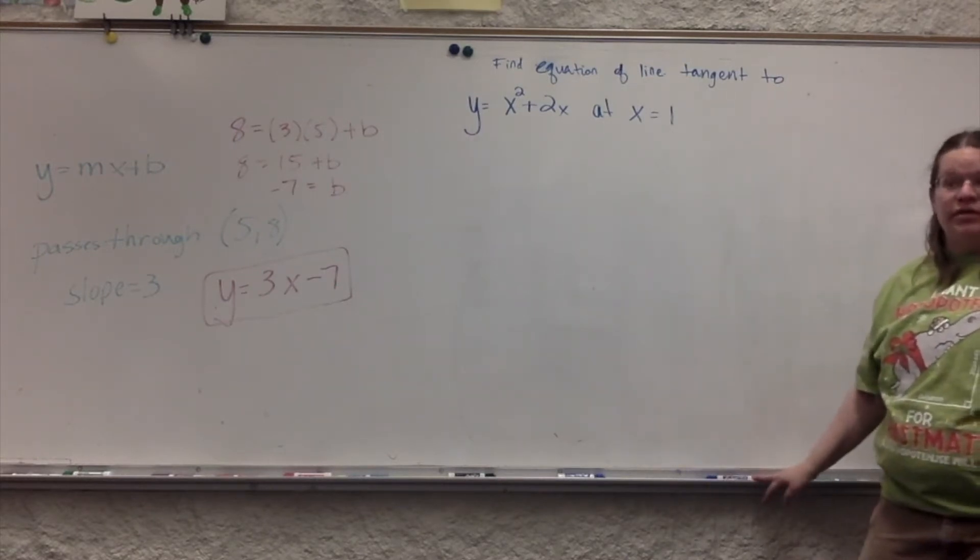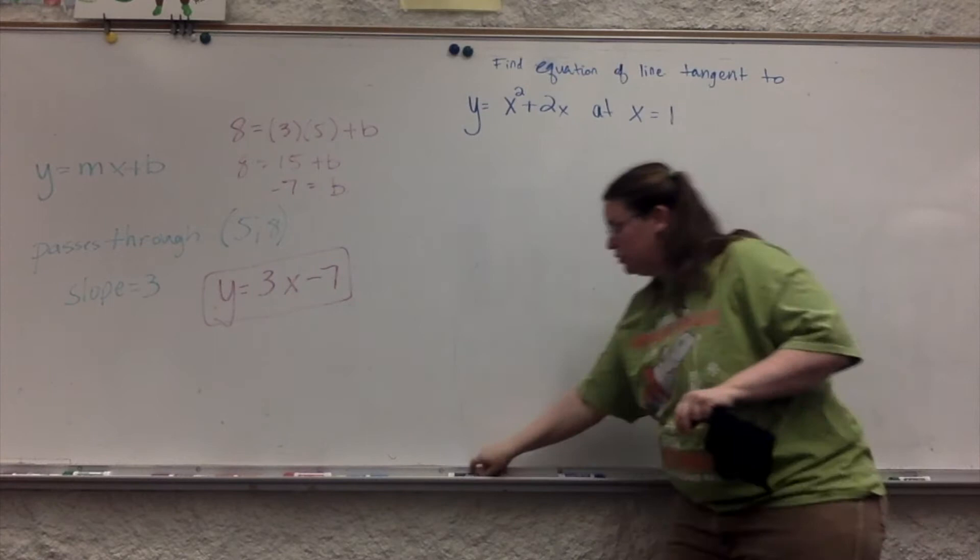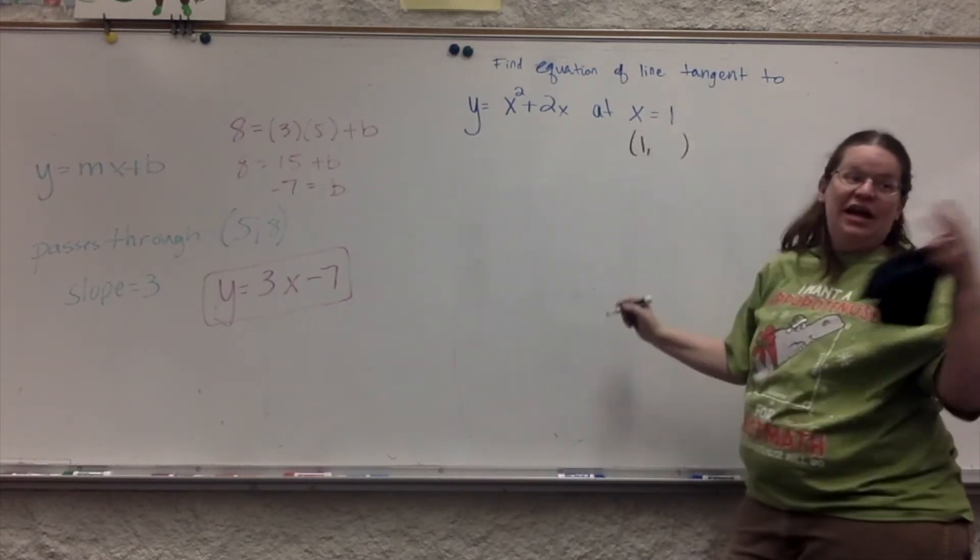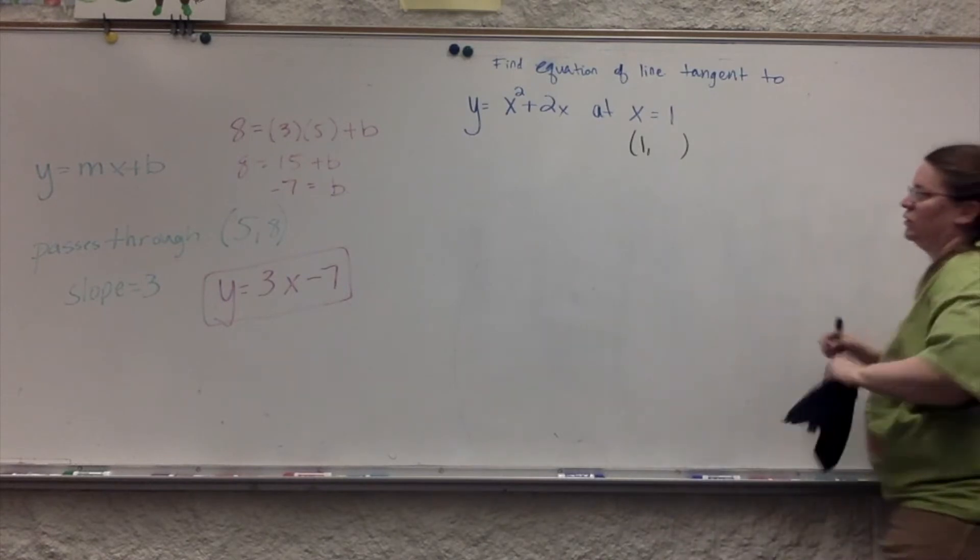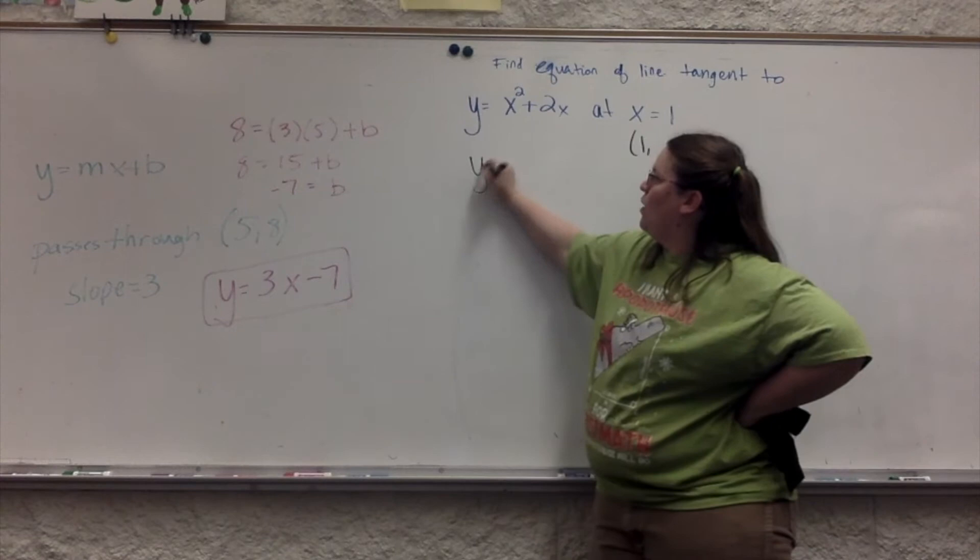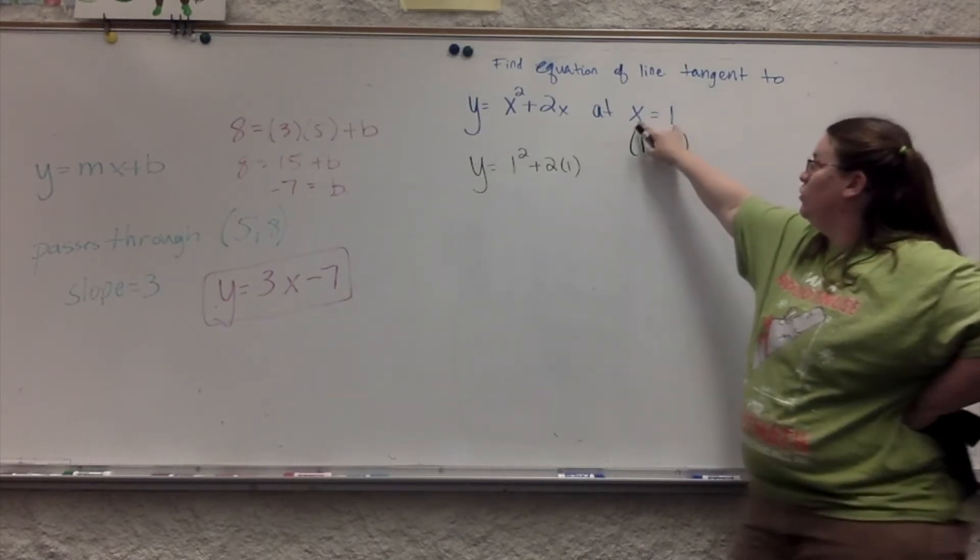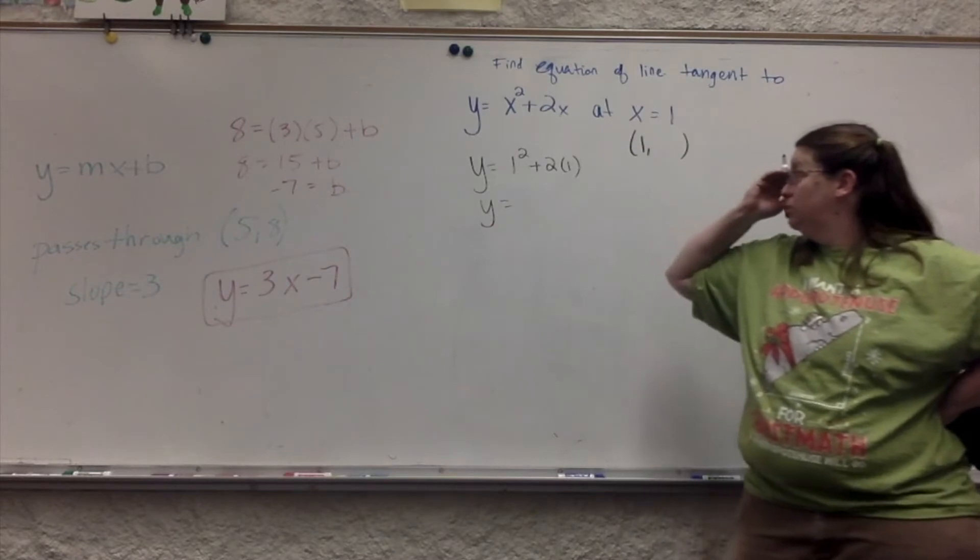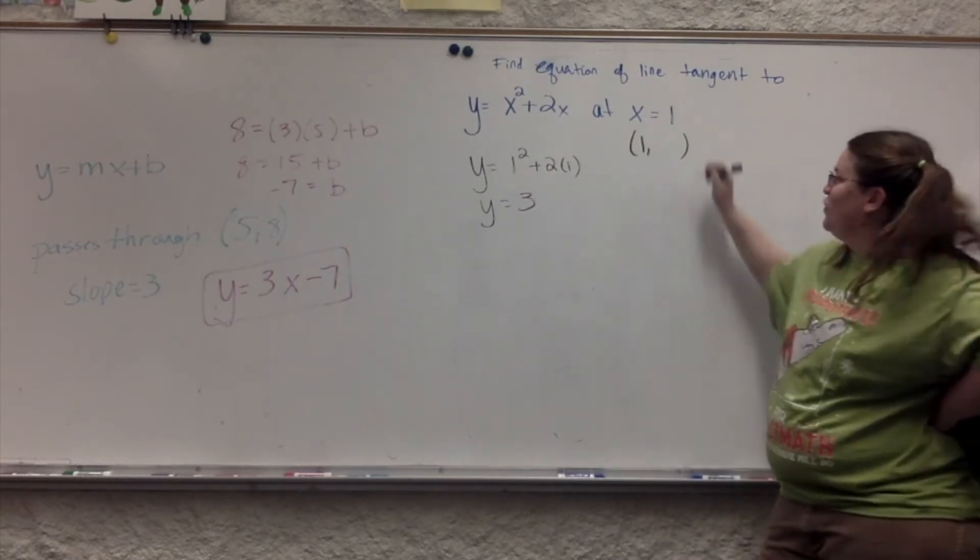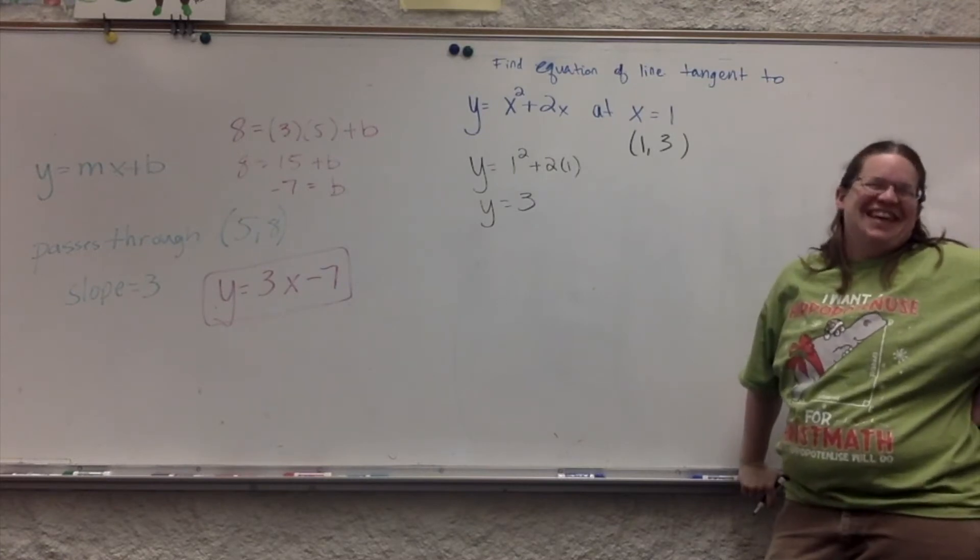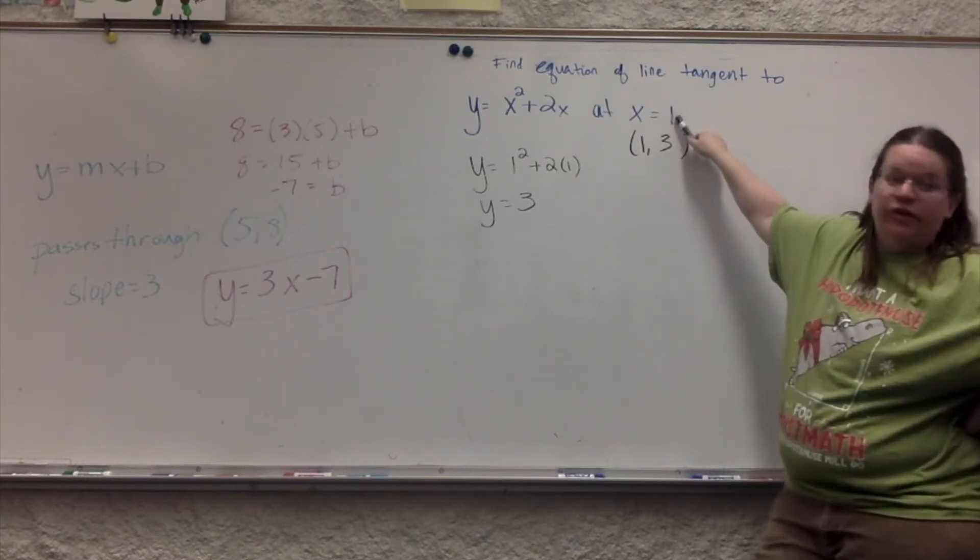So it's y equals x squared plus 2x at x equals 1. So here's the thing, very possibly, they wouldn't tell you at an ordered pair. So in this case they don't, so if x equals 1, what's y? Positive 3.